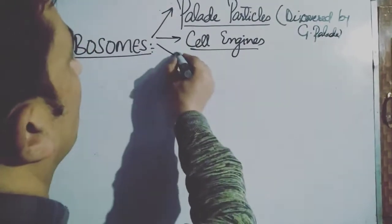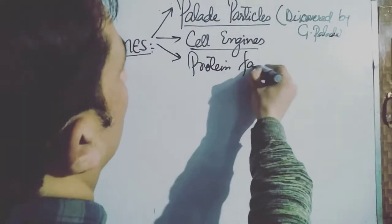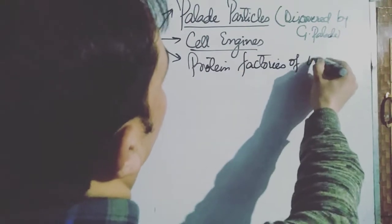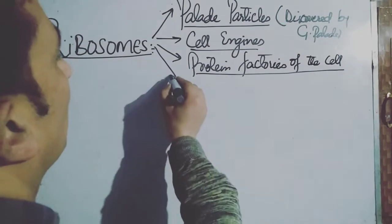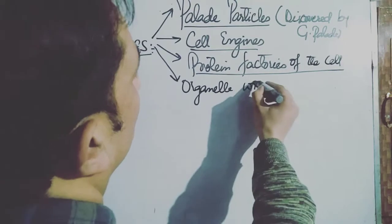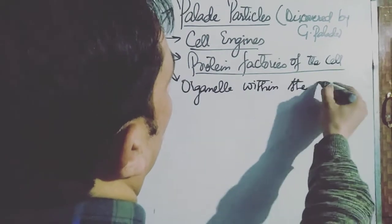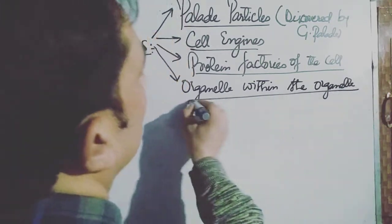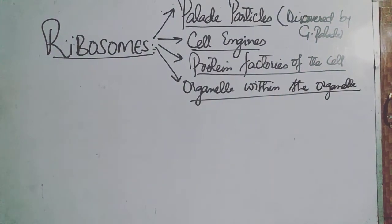Ribosomes are also very commonly known as protein factories of the cell. They are also known as the organelle within the organelle. So these are some of the alternative names for the same cell organelle, the ribosome.